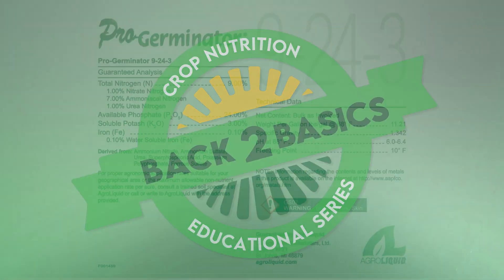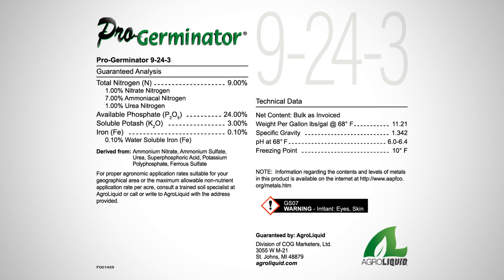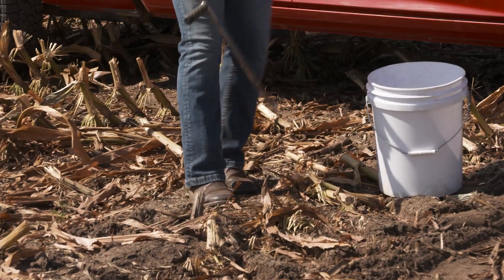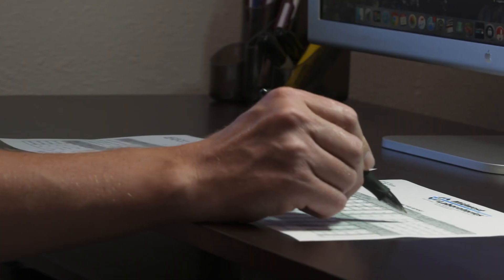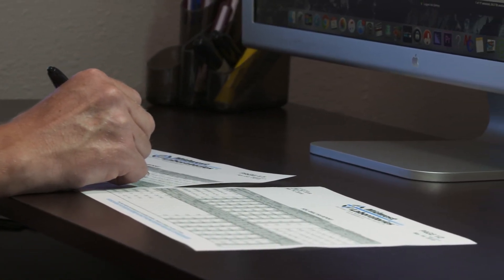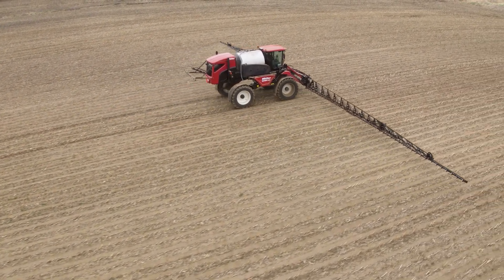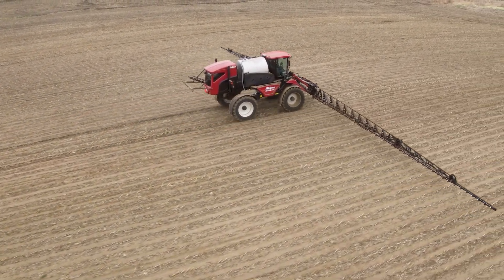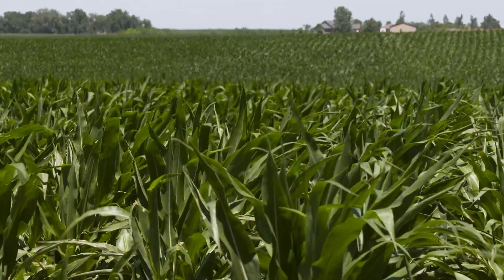Every fertilizer product has a basic analysis on the label. After evaluating your soil's nutrient inventory and capacity through a soil test analysis, you need to determine what nutrient source and what rates will best achieve your yield goals. Understanding a product's analysis is the first step in building a crop nutrition program.